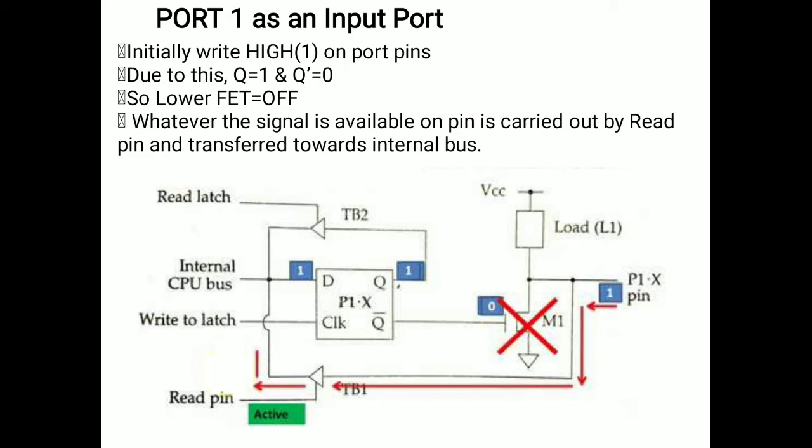As shown in the diagram, if we make the internal bus 1 (indicated in blue, blue box 1), the output of the latch Q becomes 1 and its complement Q bar becomes 0. When Q bar 0 is applied to the lower FET, the lower FET turns off and remains in the off state, so it is not connected to the actual pin P1.x (e.g., P1.0). The internal pull-up resistor is also there, so direct VCC is not provided. To use the input pin, we should activate the read buffer at the bottom side, which provides a low resistance path for the port pin.